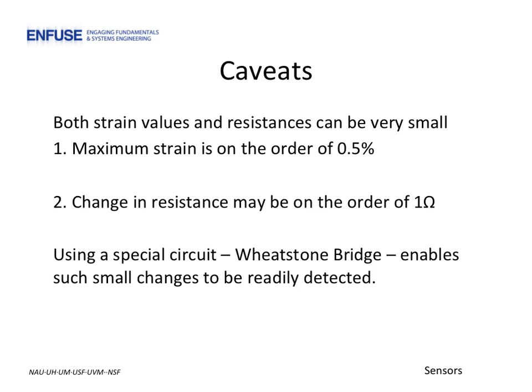Even though the strain gauge is a resistive sensor, like a thermistor or photoresistor, we cannot simply use a voltage divider circuit to condition the sensor. This is due to two realities. First, the strain of interest introduced in a structure is very small, on the order of less than half a percent, typically.